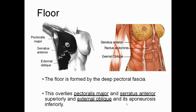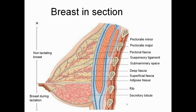The floor of the breast is formed by the deep pectoral fascia overlying the pectoralis muscle, serratus anterior superiorly, and external oblique and its aponeurosis inferiorly. In the breast in section, we can see the pectoralis minor and pectoralis major muscles, the deep fascia, pectoral fascia, suspensory ligaments, submammary spaces, superficial fascia, adipose tissue, and the secretory lobules.